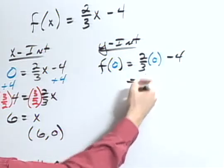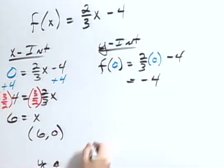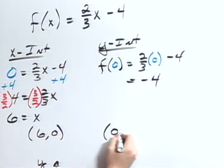Two-thirds times zero is zero, so I'm left with simply negative four. That gives me my y-intercept of zero, negative four.